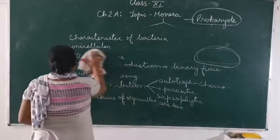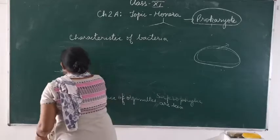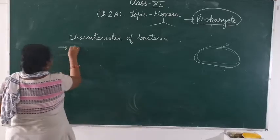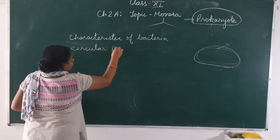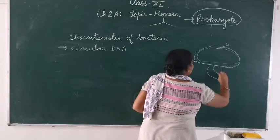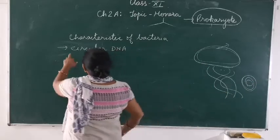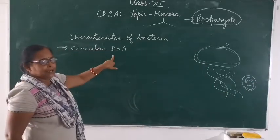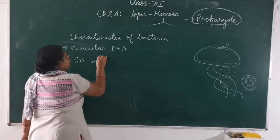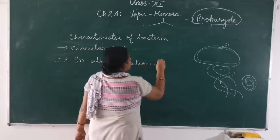After that we will discuss about the next point, that is circular DNA. In eukaryotes you get the DNA in a linear manner. But here we are getting the DNA in a circular manner. So that is why we call the genetic material of bacteria circular DNA. In all conditions it will survive.